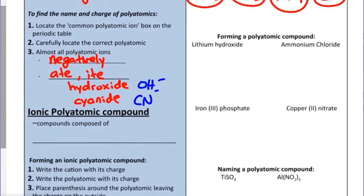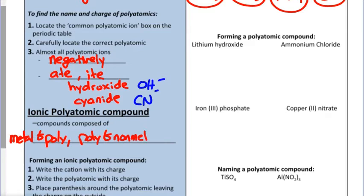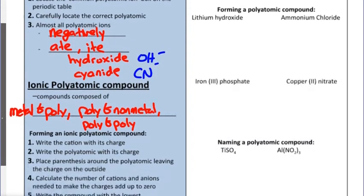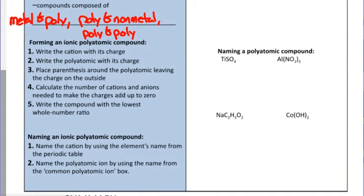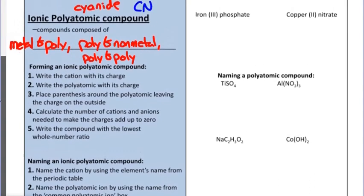An ionic polyatomic compound involves positive and negative ions bonding together. These are commonly composed of a metal and a polyatomic, but it's also possible to have the ammonium ion bonded to a nonmetal. It's also possible for polyatomics to bond with other polyatomics — ammonium bonded to a negative polyatomic ion. The good news is all the rules from the last two videos still apply; we just have to watch the suffix and identify the polyatomic ion in the formula.